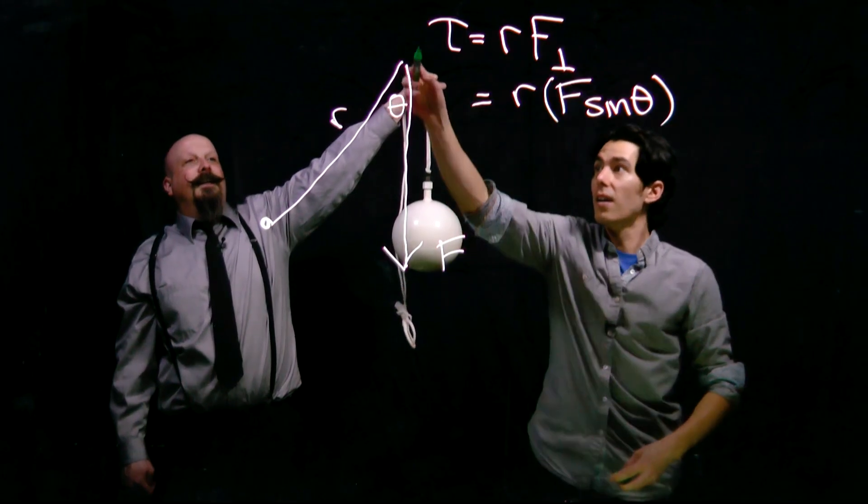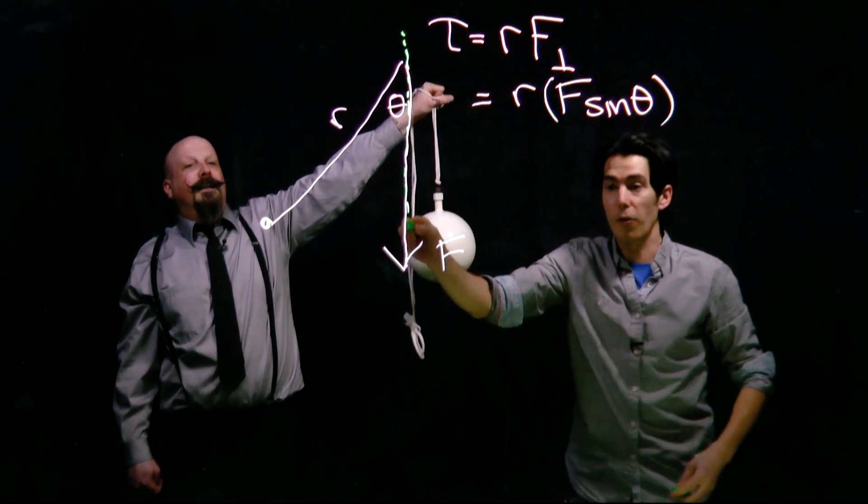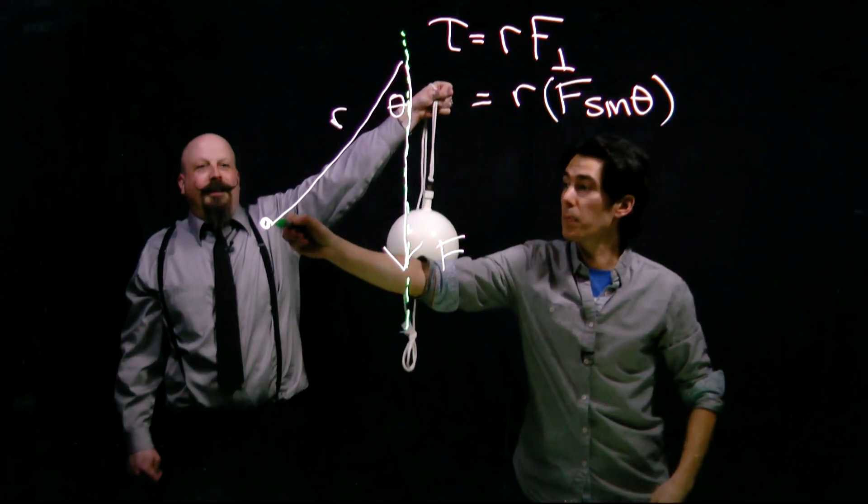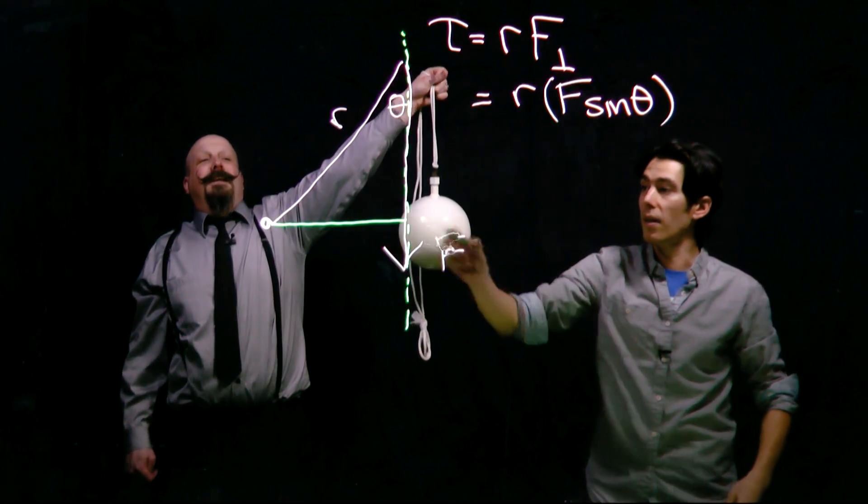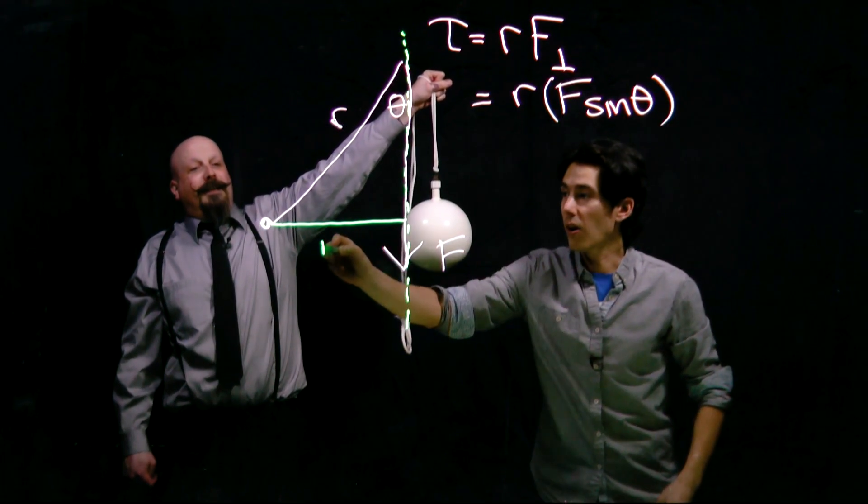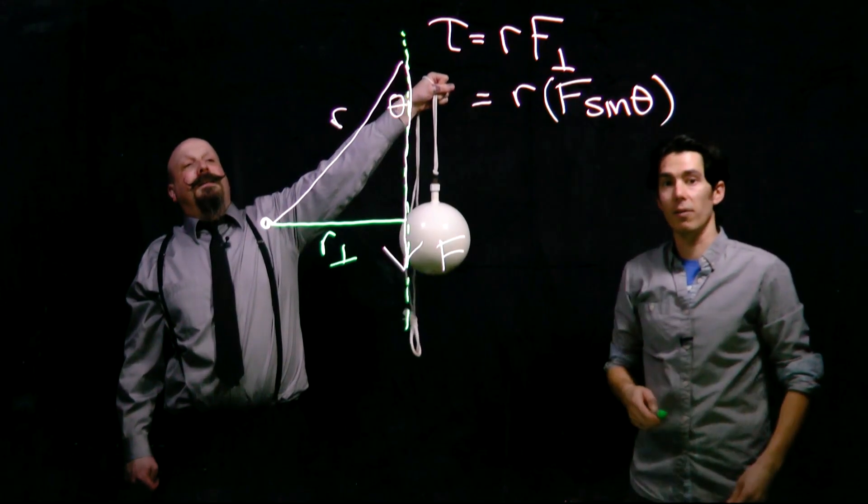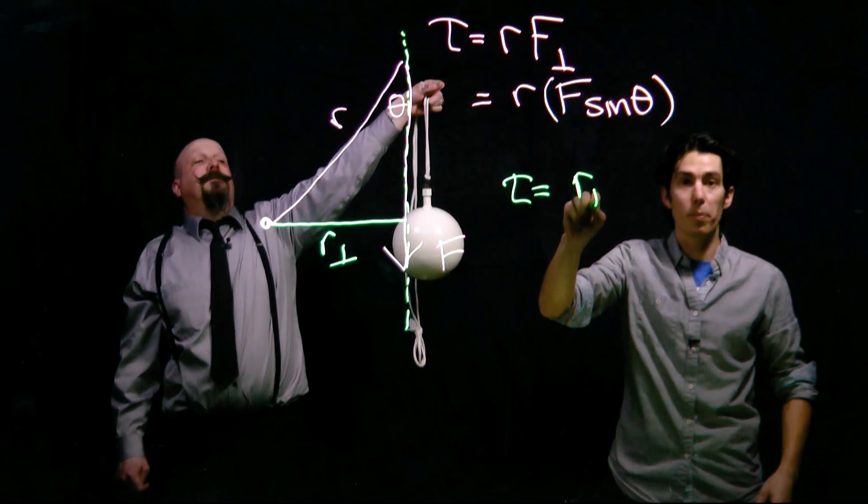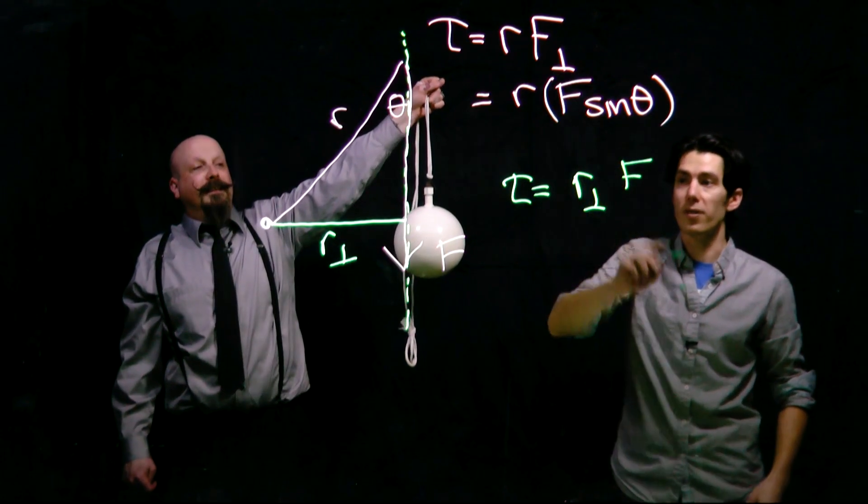we're going to take a look at the line here that the force acts on, and look at the distance between the pivot point and the force. I'm going to call this R perpendicular. In the second method, we get the torque by calculating R perpendicular times the full force F.